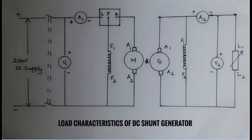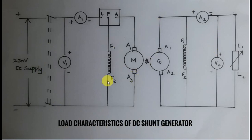Hi all, today I am going to conduct an experiment in machines lab using virtual lab. The experiment we are going to perform is load characteristics of DC shunt generator. This is the circuit which will be used in the simulation platform. Since we are going to plot the load characteristics, we have to obtain the relation between the terminal voltage and the load current.